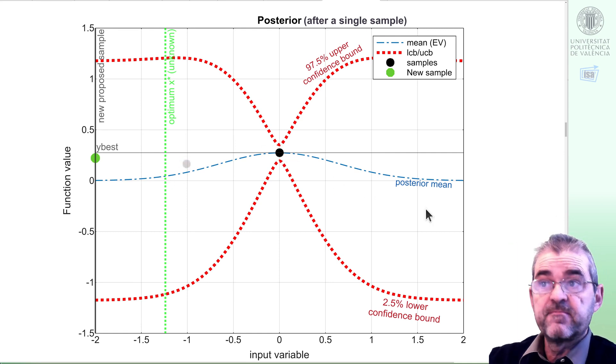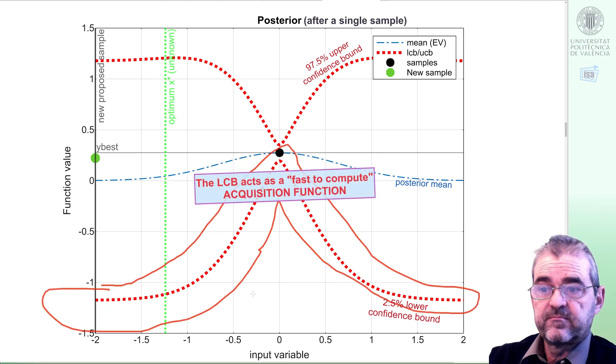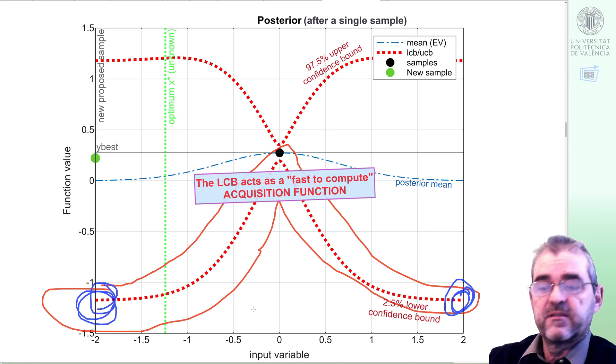In blue, I have the posterior mean and in red dotted lines, I have the upper and lower confidence bounds. And my heuristics in exploring where the optimum might be is exploring the minimum of this line, which is achieved here and here. And MATLAB just chose the left extreme, but maybe other code versions or MATLAB versions might choose the right one. No problem. I mean, we keep the left.